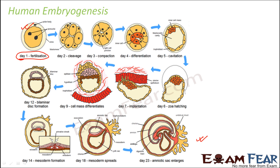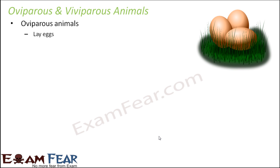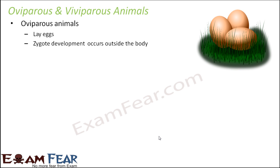Based on what kind of organisms animals give birth to, they are divided into two types: oviparous and viviparous. Oviparous animals are those which lay eggs — they do not give birth to young ones directly. The young ones are protected inside the egg and hatched later, so zygote development occurs outside the body. The egg has a hard calcareous shell outside so the inner content is protected, and inside the egg the zygote develops to form an embryo and then a little organism.